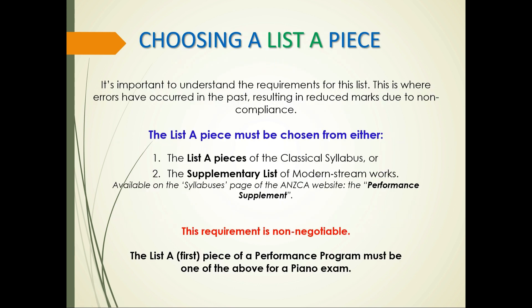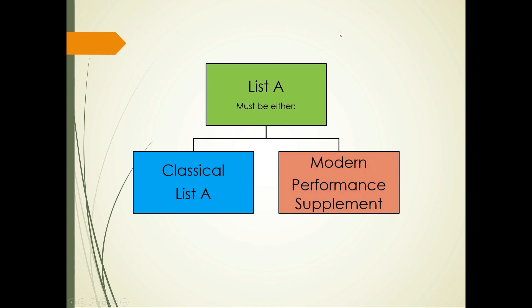When choosing a list A piece, it's important to understand the requirements for this list, as errors have occurred in the past resulting in reduced marks due to non-compliance. The list A piece must be chosen from either the list A pieces of the classical syllabus or the supplementary list of modern stream works. This is available on the syllabus page of the ANSCA website, titled the performance supplement. This requirement is not negotiable — the first piece of a performance program must be chosen from one of these categories.